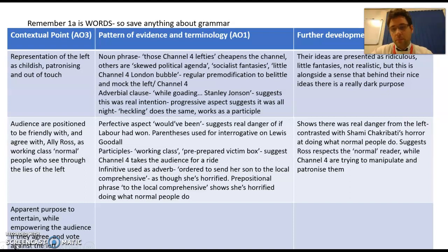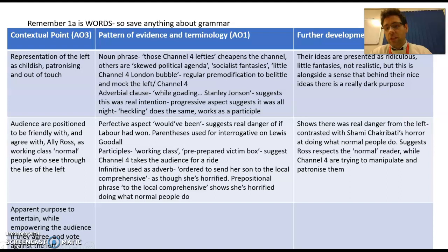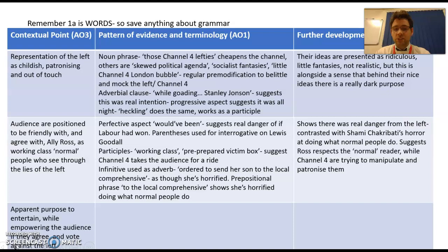He uses a question about Lewis Goodall - the sentence structure might talk about the fact that it's in parentheses, in brackets, and worded as an interrogative. That's to do with how it's constructed. You get participles used - verbs used like adjectives. So 'working class': 'working' is a verb, but here it becomes an adjective. We get 'pre-prepared victim box' - 'pre-prepared' is a verb normally, but here it becomes an adjective describing the victim box. What it suggests is they have no respect for the working class - they've already got them pinned down as victims. Those participles suggest Channel 4 is taking the audience for a ride, insulting their intelligence.